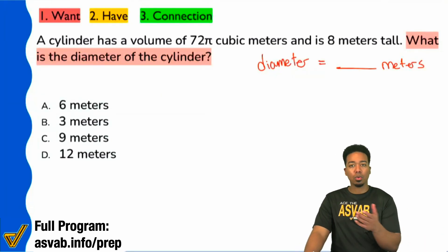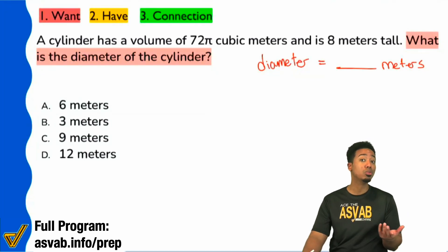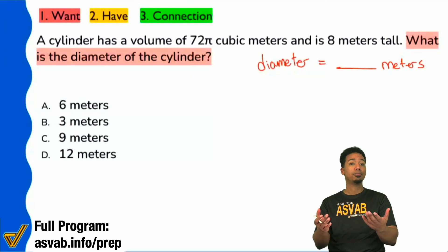Now what are we working with? We know that we're dealing with a cylinder. The next thing we need to understand is, what information about this cylinder are we given that we can use to find the diameter? Let's just figure it out. Let's understand what we're given.